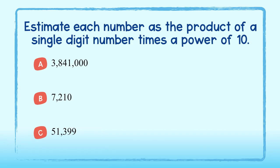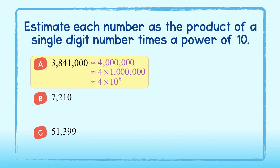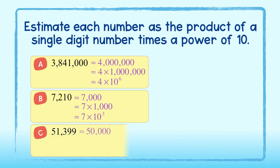Estimate each number as the product of a single digit number times a power of 10. Let's round A up to 4 million — we can write this as 4 times 10 to the sixth power. Part B is rounded down to 7,000, written as 7 times 10 to the third power. Lastly, Part C can be rounded down to 50,000, written as 5 times 10 to the fourth power.